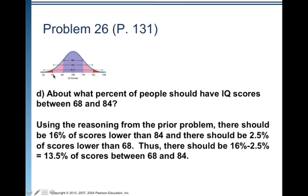So 2.5 percent of all scores would be below 68 and 2.5 percent would be above 132. But we don't really care about that. What we do care about is that 2.5 percent are lower than 68. So there should be 16 percent minus 2.5 percent or 13.5 percent of scores between 68 and 84.